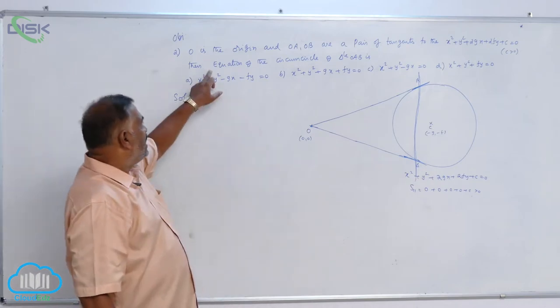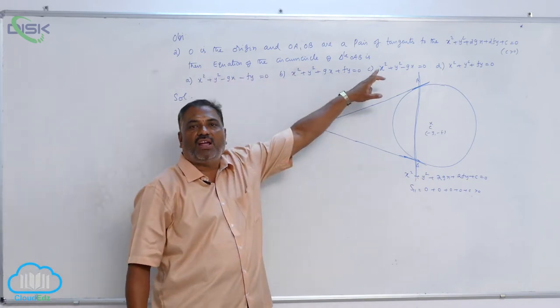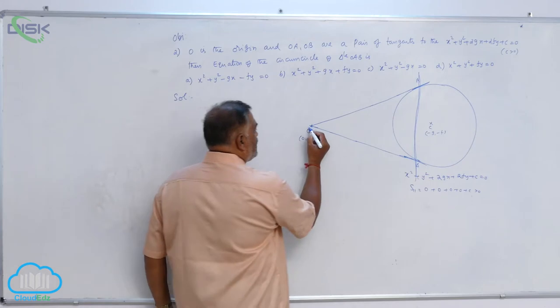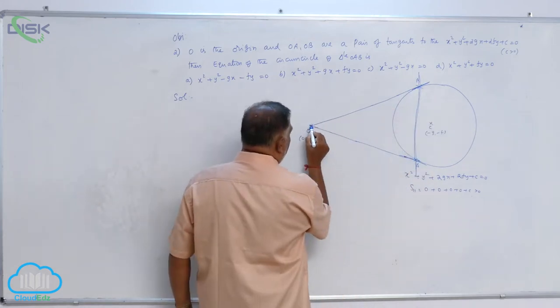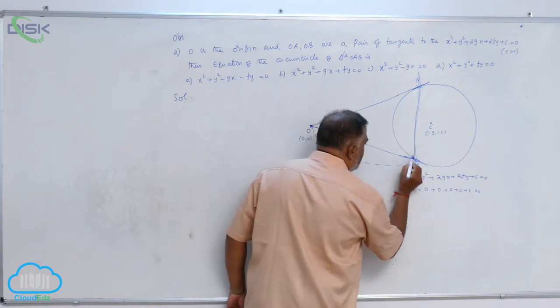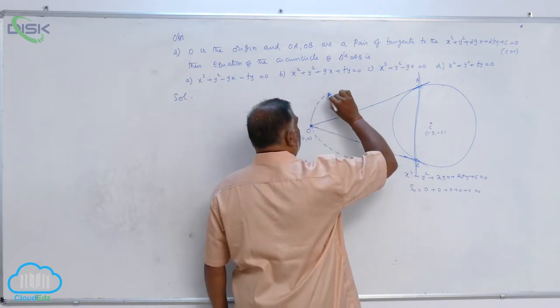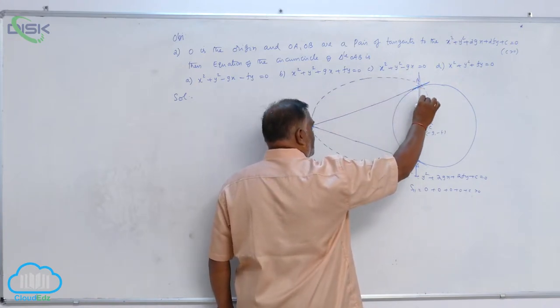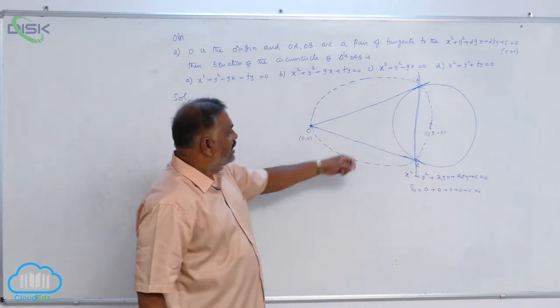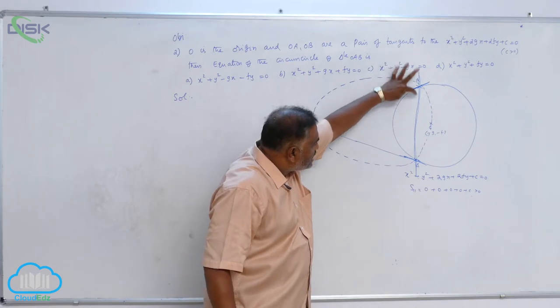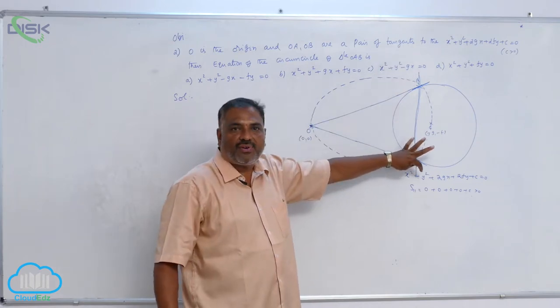Now, we require the equation of circumcircle of triangle OAB. That means, the circle passing through these three points, if you can join these three points like this through a circle equation, automatically you are able to see. Now, this is going to be the equation of chord of contact.